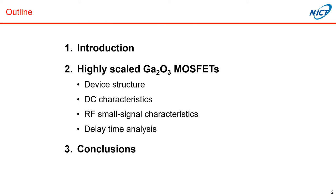This shows the outline of my talk today. As an introduction, I'd like to introduce briefly the material properties and features of beta-gallium oxide. And then I'll move on to the main topic: high-frequency gallium oxide MOSFETs, covering device structure, DC and RF device characteristics, and also the delay time analysis. Then I'll conclude my talk towards the end.